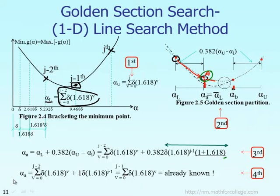There is another possibility. Suppose for some reason the function at alpha A is at a higher point, and the function at alpha B is at a lower point. In that case, the function at alpha A is less than the function at alpha B.